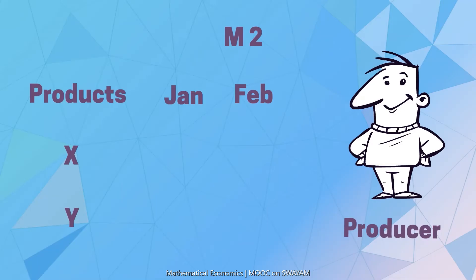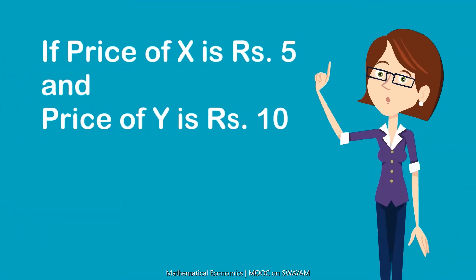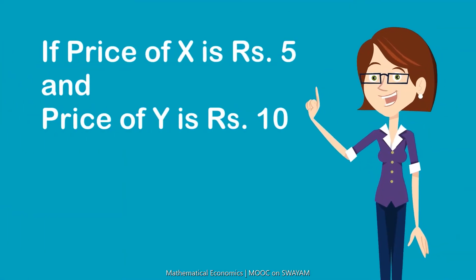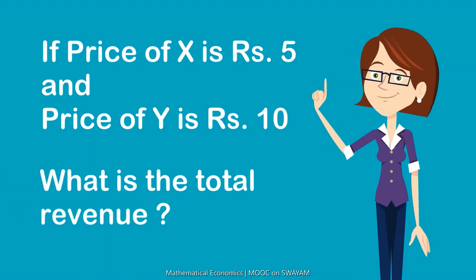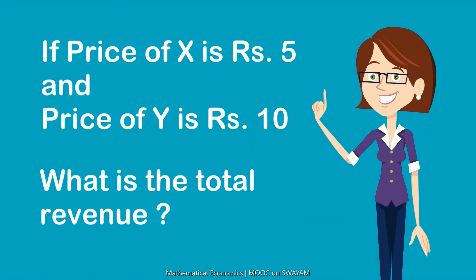In market M2, he sells 5 units of product X and 10 units of product Y in January, and in February he sells 15 units of product X and 15 units of product Y. If the price of product X is Rs.5 and the price of product Y is Rs.10, what is the total revenue earned by the producer?